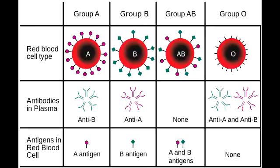Name the four different blood groups. The four different blood groups include blood group A, blood group B, blood group AB, and blood group O. If you are a person with blood group A, you have A antigen on your red blood cell surface and anti-B antibody in the plasma.